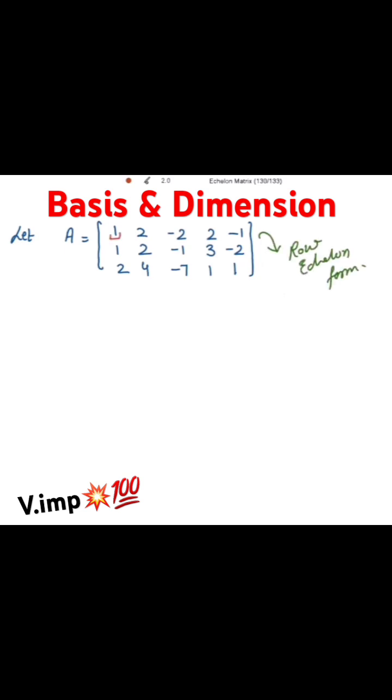Now in the first row I am having 1 to be the leading entry. To make this be your leading element, we need to make these two entries to be 0.